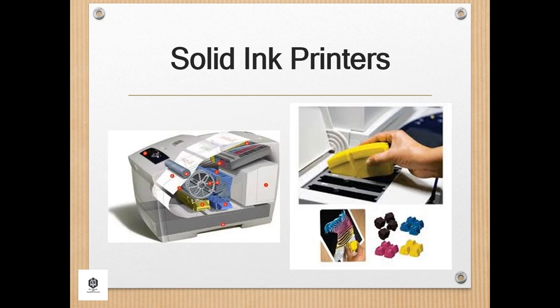Solid ink printers, also known as phase change ink or hot melt ink printers, are a type of thermal transfer printer. They use solid sticks, crayons, pearls, or granular ink materials. Common inks are CMYK colored ink, similar in consistency to candle wax, which are melted and fed into a piezo crystal-operated print head. A thermal transfer print head jets the liquid ink onto a rotating oil-coated drum; the paper then passes over the print drum, at which time the image is immediately transferred or transfixed to the page.